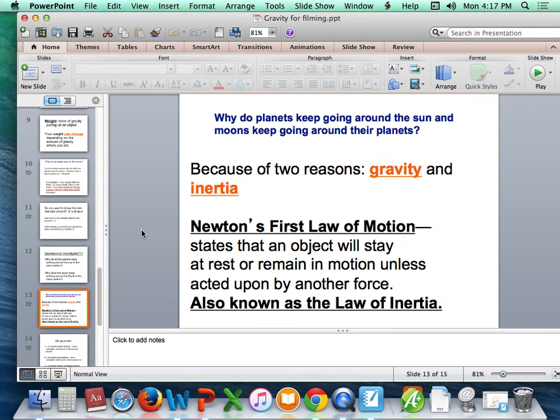Newton also had a first law of motion. This first law basically stated that an object at rest will stay at rest and an object in motion will stay in motion unless acted upon by another force. Basically, things want to keep doing what they're doing. If an object's moving, it wants to keep moving. If an object's still, it wants to stay still. It will keep doing those things unless something else interrupts it. The interruption would be another force. Newton's first law is also known as the law of inertia.